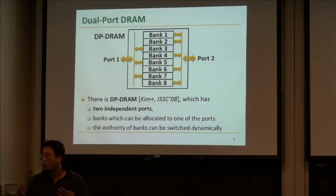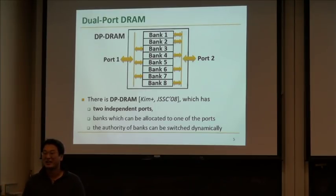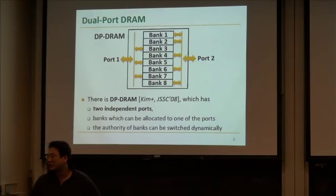Bank two is allocated to port two and bank three is allocated to port one. The authority to access each bank can be changed dynamically at runtime by issuing a specific command. How can we use this dual-port memory?